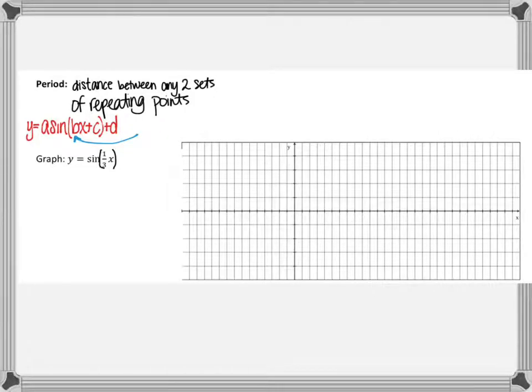And if you're multiplying the X by the B value, remember, anything inside of the trig function or inside of the argument, the parent function is the opposite. So to find the new period, you can take 2π and divide it by the B value.